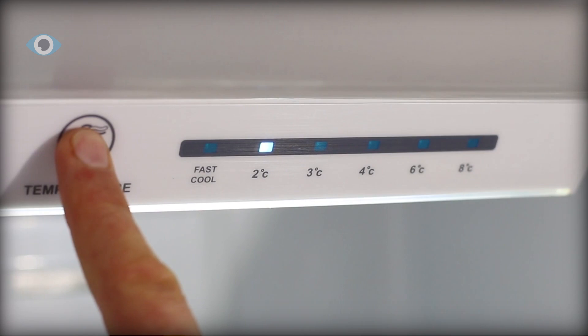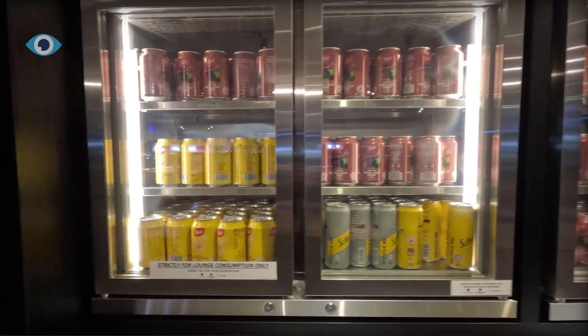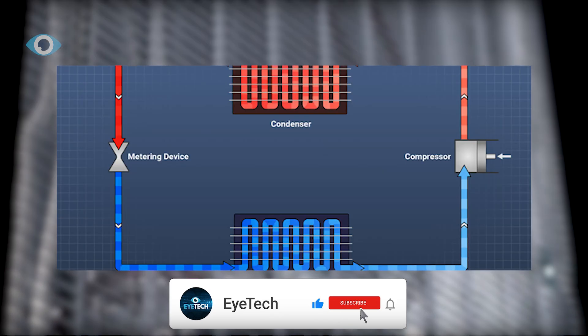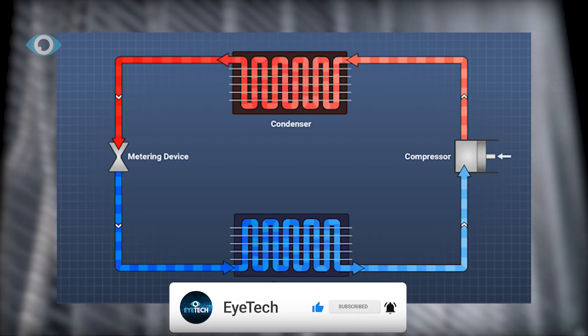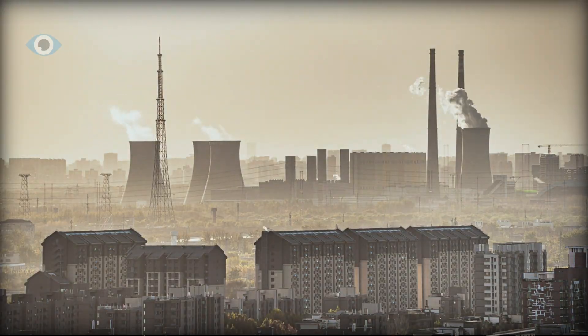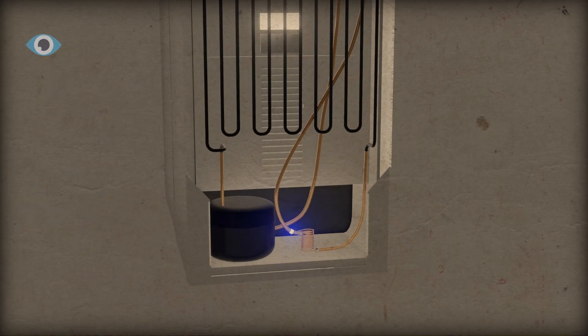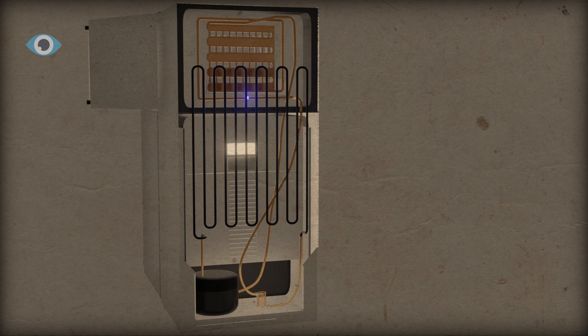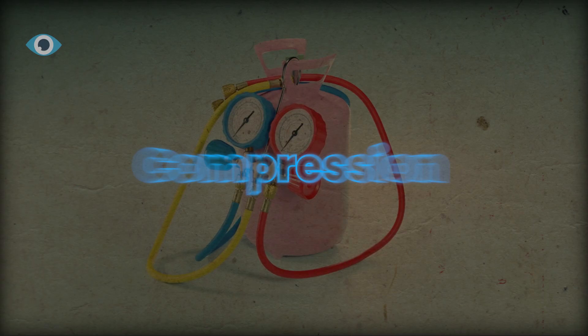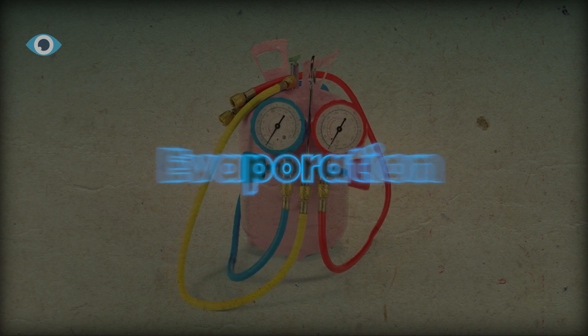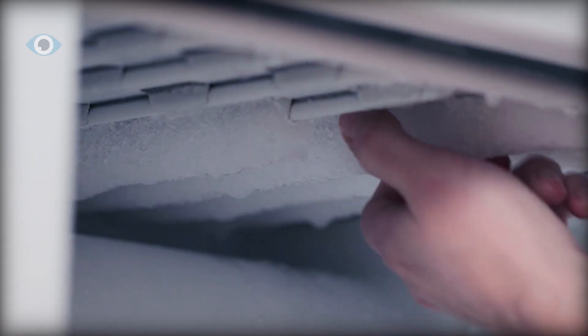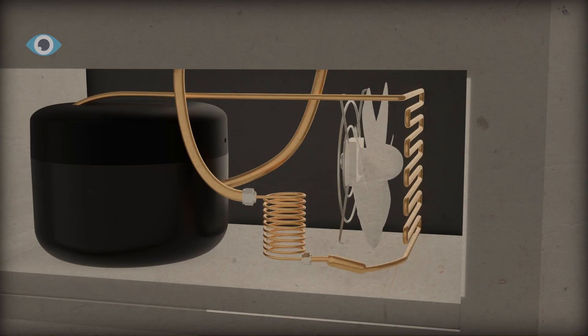The Problem with Traditional Cooling. Most of the 5 billion fridges, ACs, and heat pumps in the world today rely on the vapor compression cycle, a 19th-century invention still powering 21st-century cooling. The process is elegant, but flawed. It moves heat by forcing a refrigerant through four stages—compression, condensation, expansion, and evaporation. The refrigerant absorbs heat from inside a fridge or room and releases it outside.